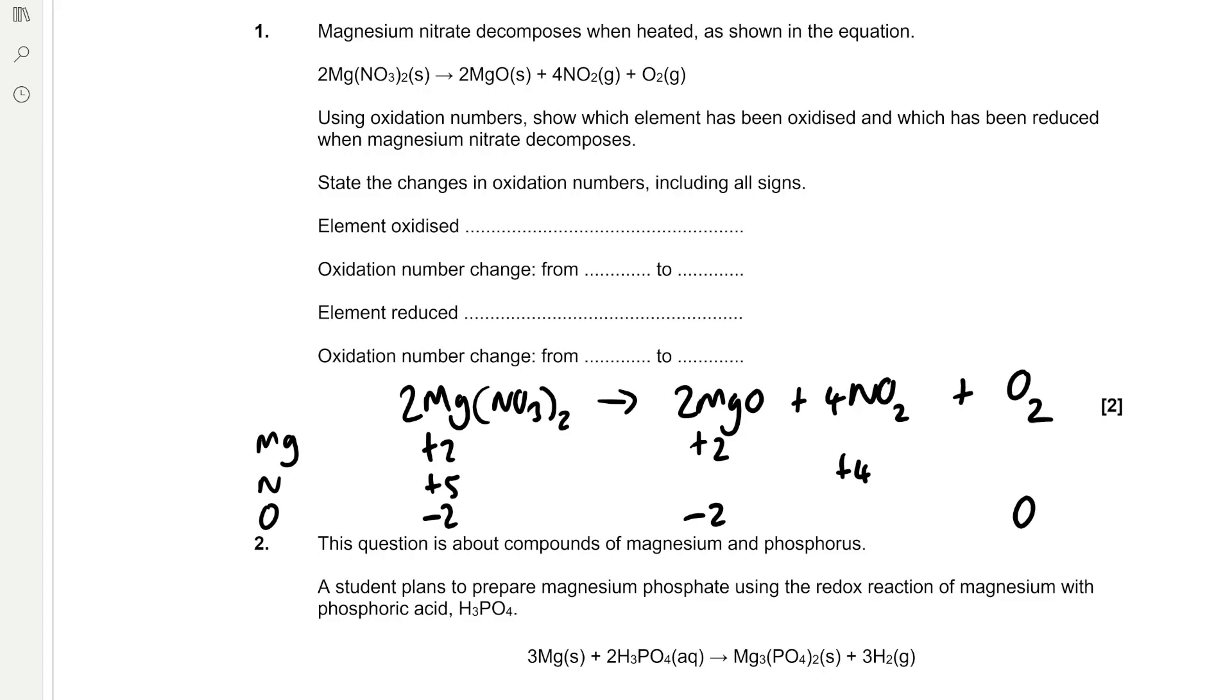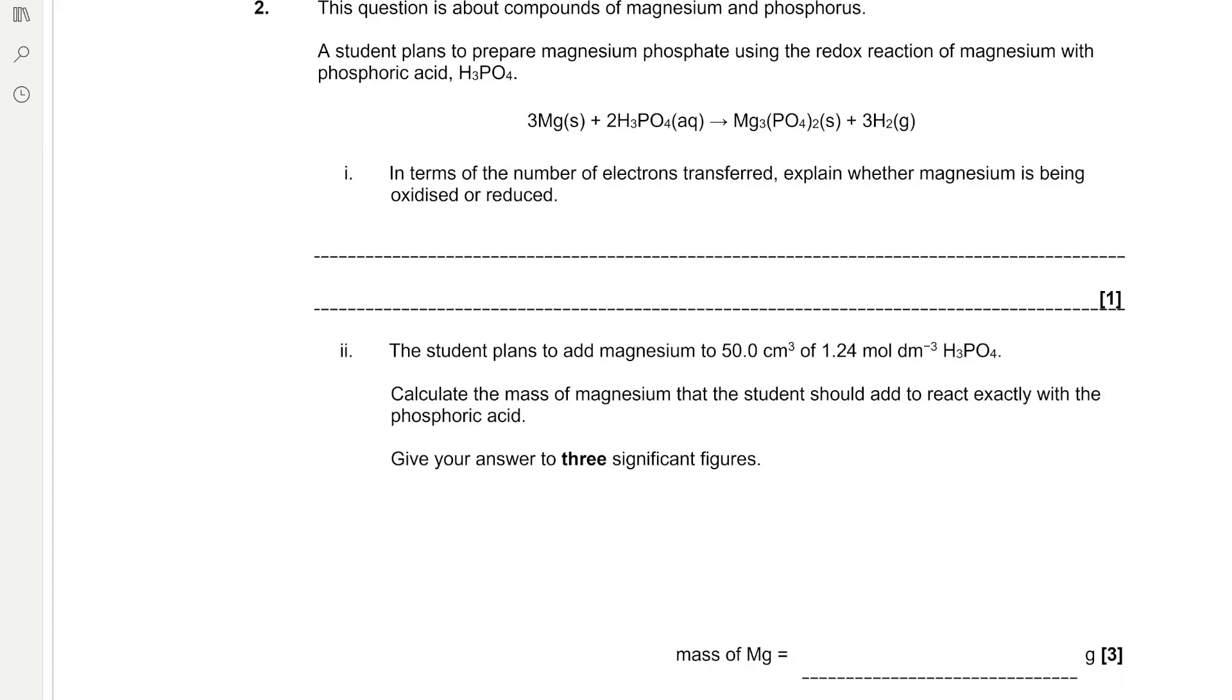So we can see that nitrogen has been reduced from +5 to +4, and oxygen has been oxidised from -2 to 0. Remember, the definition of oxidation is the loss of electrons and the definition of reduction is the gain of electrons.